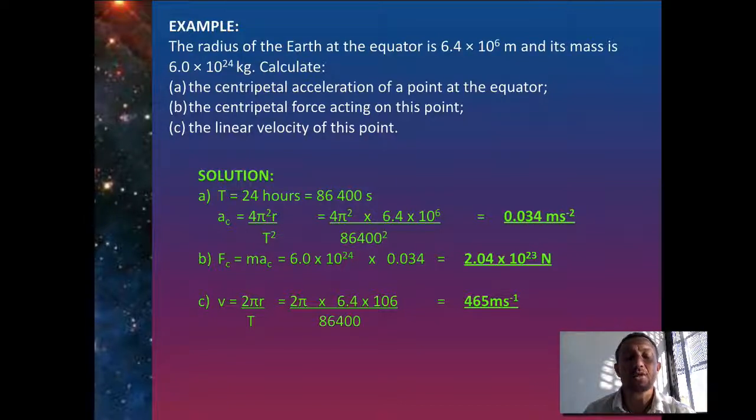divided by the time in seconds, which is 86,400 seconds. So at this point, at a specific point on the radius of the Earth on the equator, I would be travelling at 465 metres per second.